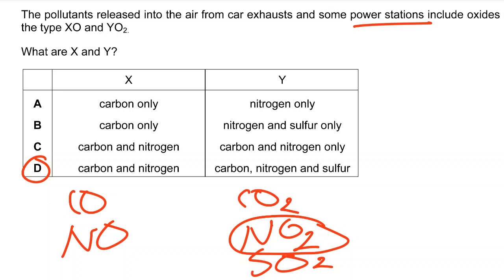Most candidates chose B because they had no idea about these oxides. The key point is: if you have nitrogen dioxide, you also need nitrogen monoxide at the same time. Candidates also missed that carbon dioxide is the main product of combustion reactions and is considered a pollutant.